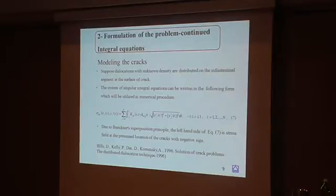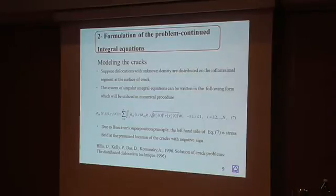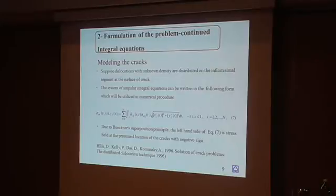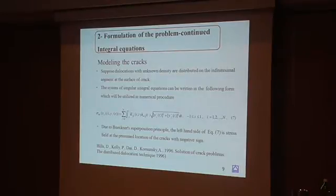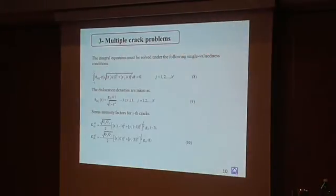In this section, formulation of the problem after finding the Green's function solution is possible. We construct the main problem by distributing dislocations with unknown density along infinitesimal segments at the crack location. The system of singular integral equations can be written in the form of equation 7. Due to the superposition principle, the left-hand side of equation 7 is the stress field at the crack location with a negative sign. After some manipulation, these equations are rewritten, and the integral equation must be solved under the single-valuedness condition — a well-known condition in fracture mechanics.